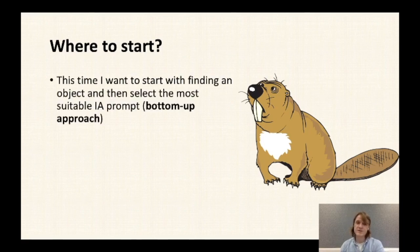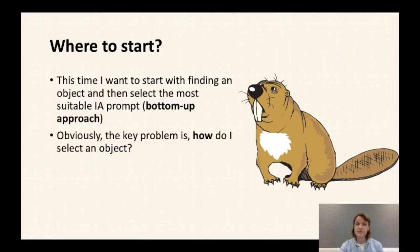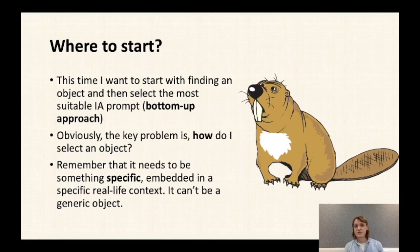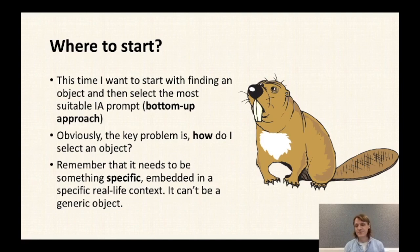Because this time I want to start with finding an object and then selecting the most suitable IA prompt, the key problem is how do I select the first object? I remember from the TOK requirements that the object has to be something specific — embedded in a specific real-life context. It can't be a generic object: a teddy bear is not okay, but a particular teddy bear I used to have as a child and grew emotionally attached to is better.